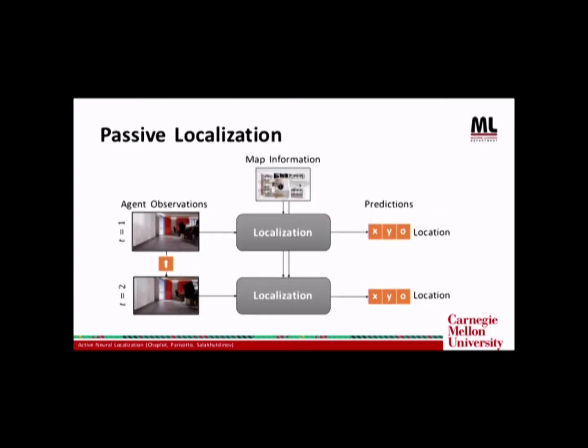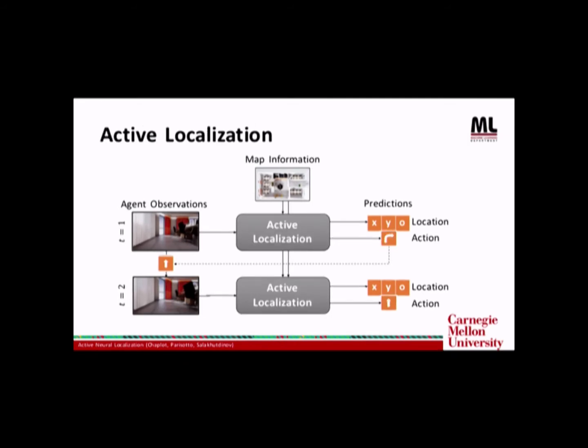So traditional localization algorithms receive a sequence of observations and actions and they use the map information to output a sequence of location predictions. This is also known as passive localization because the agent doesn't have any control over its future observation. However, in active localization, the agent is also capable of predicting the actions to be taken. The actions taken by the agent affect the future observation and that helps the agent to localize much faster and much more accurately.